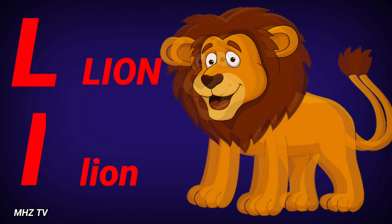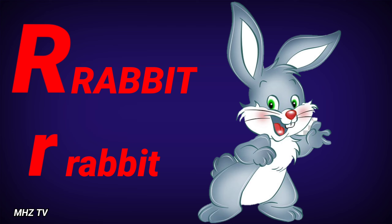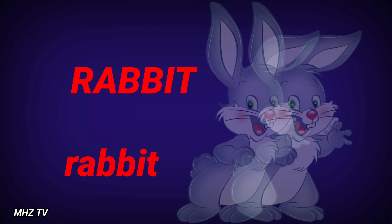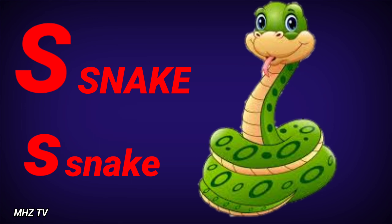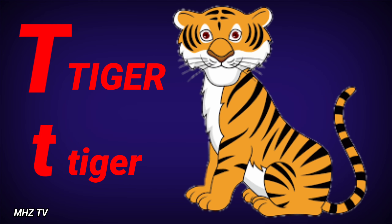O for owl. P for parrot. Q for quail. R for rabbit. S for snake. T for tiger. U for unicorn.